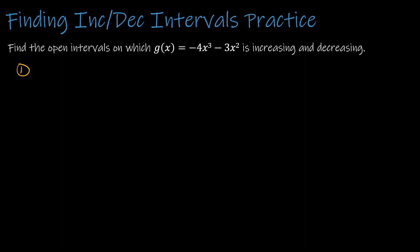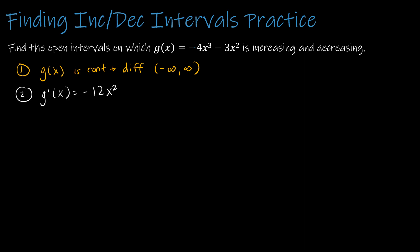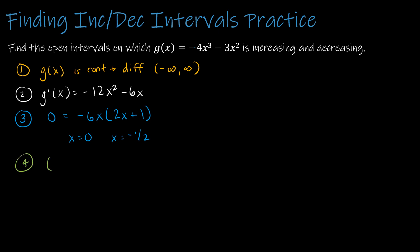For the second example with g(x), it is continuous and differentiable over the entire domain, negative infinity to infinity. Finding g'(x) gives negative 12x² minus 6x. Setting g'(x) equal to 0 and factoring out negative 6x gives 2x plus 1, so the critical numbers are x equals 0 and x equals negative one half. Ordering least to greatest: negative one half, then 0.